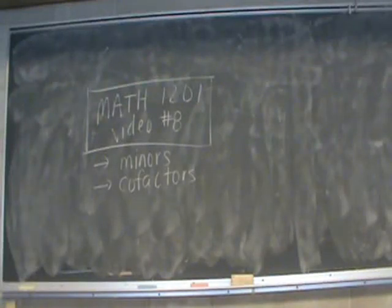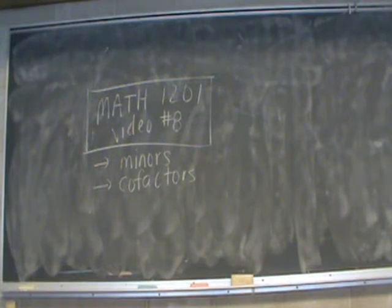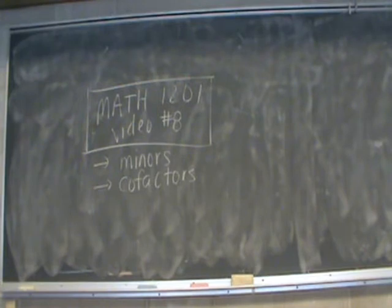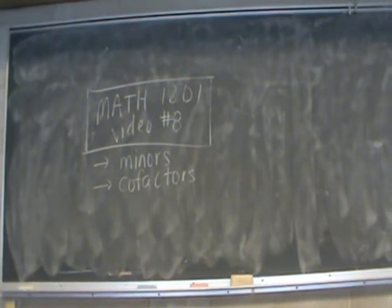This is Math 1201 video number 8. In this video we're going to take a look at some of the building blocks we're going to use in the next video, and those building blocks are called minors and cofactors.